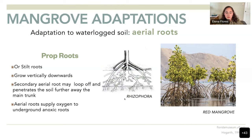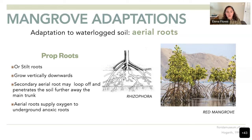The Rhizophora genus, or red mangroves, are characterized by having aerial roots known as prop roots or stilt roots. These are arm-like structures that extend away from the main trunk and may develop secondary aerial roots which attach to the substrate. When many mangroves attach to the substrate next to each other, they form a barrier that can prevent storms and winds from destroying the coast.